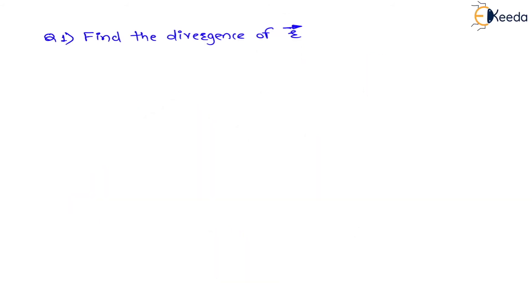Now let us understand the questions. Question number one is: find the divergence of vector r. Everyone knows that vector r is a position vector.